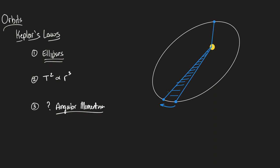If this area is very long and narrow, then in order for the planet on the other side to sweep out the same area in five days, it's going to have to move further. His law states that objects in orbit sweep out equal areas in equal time. A big implication of this is that the planet travels faster when it's closer to the star and slower when it's further away.